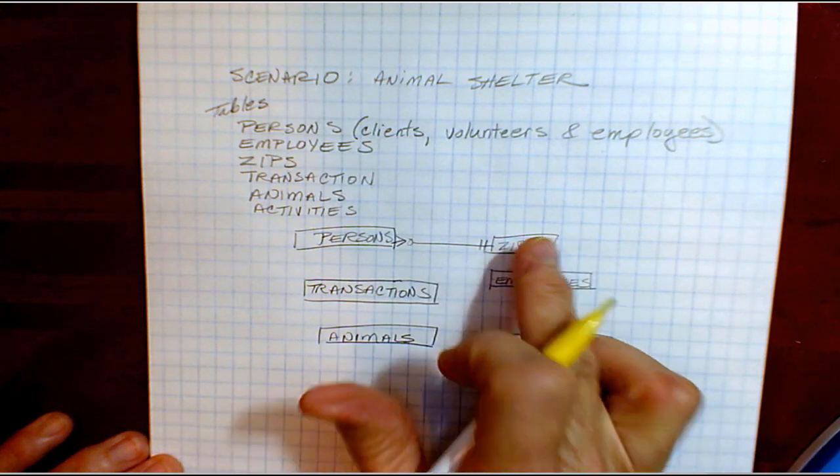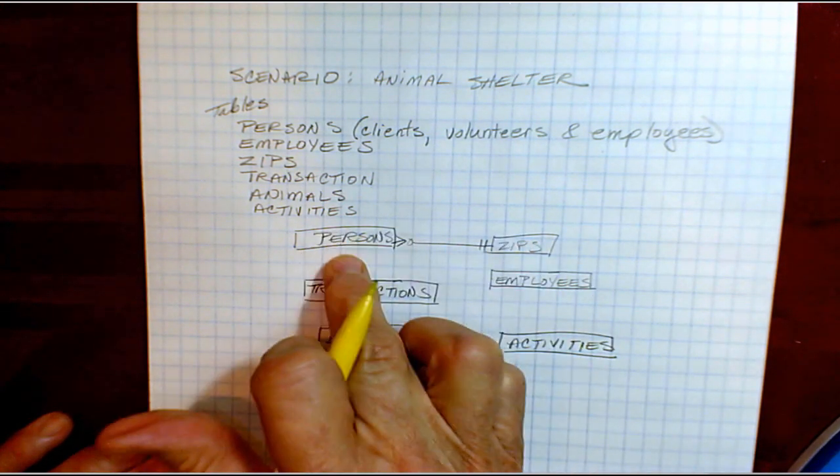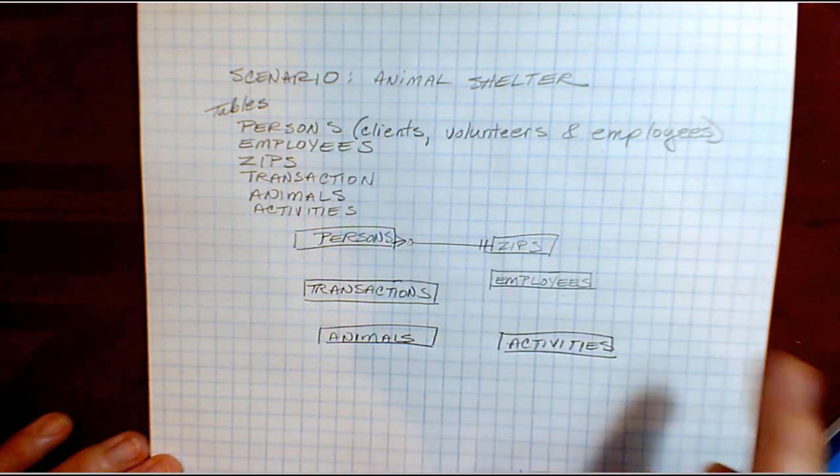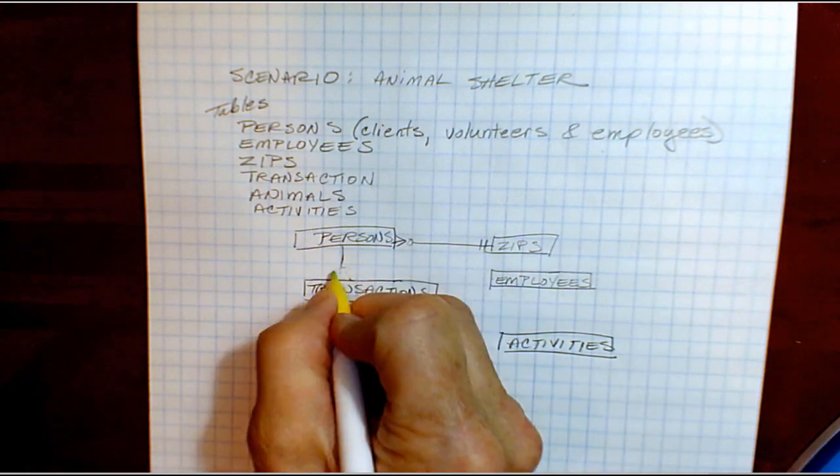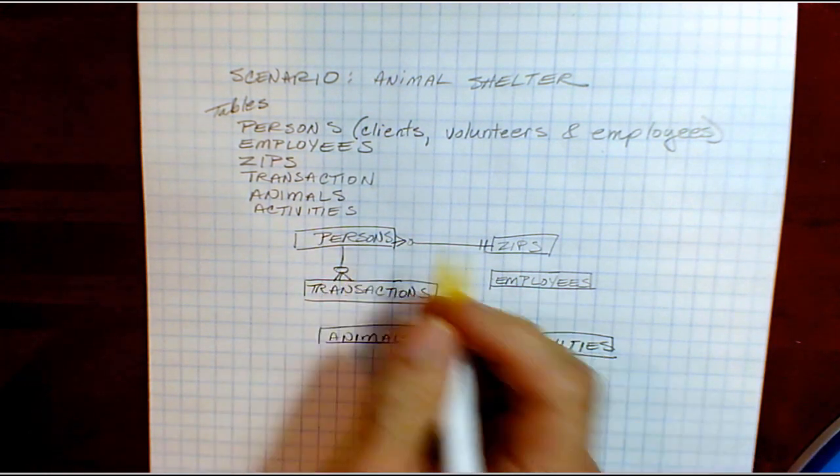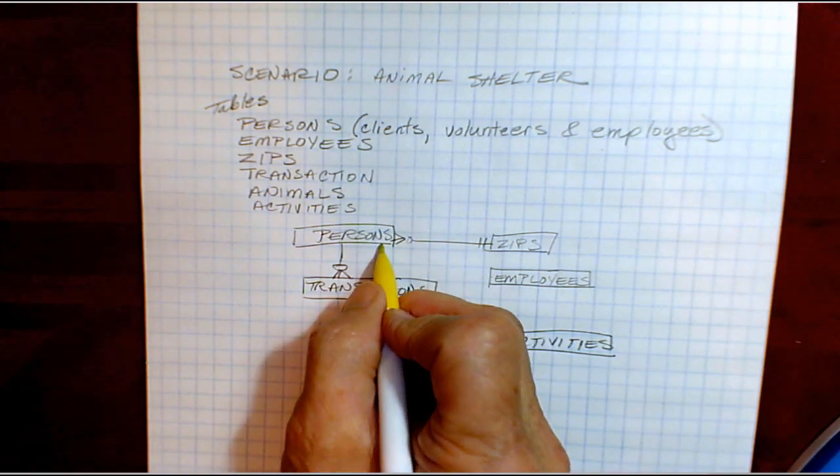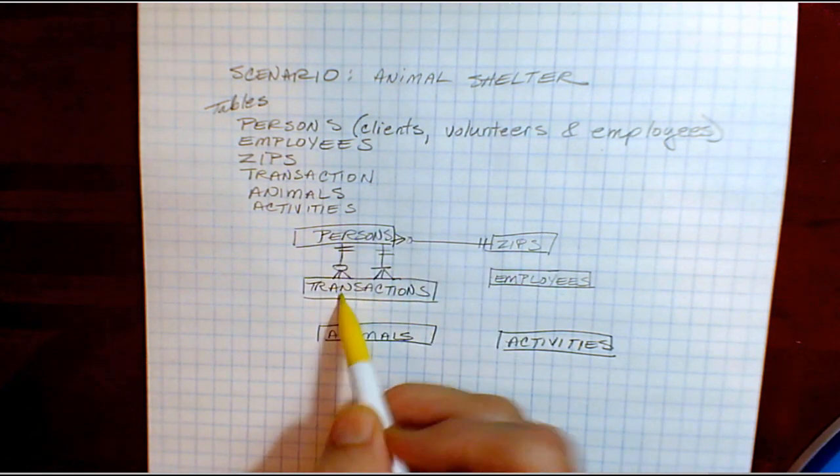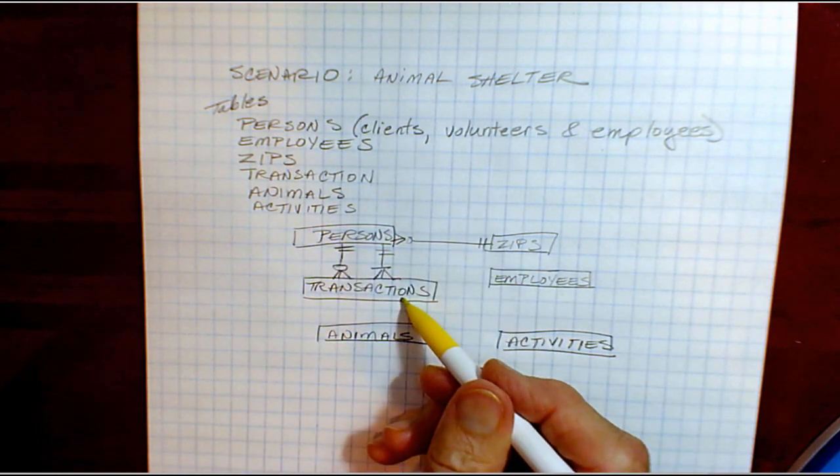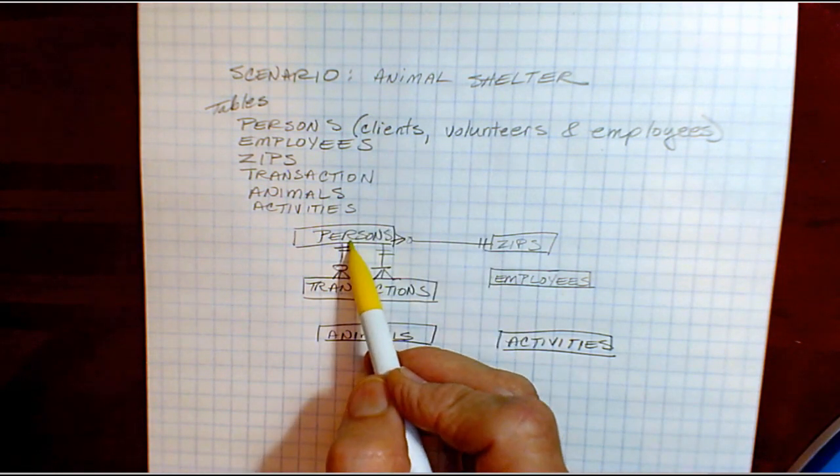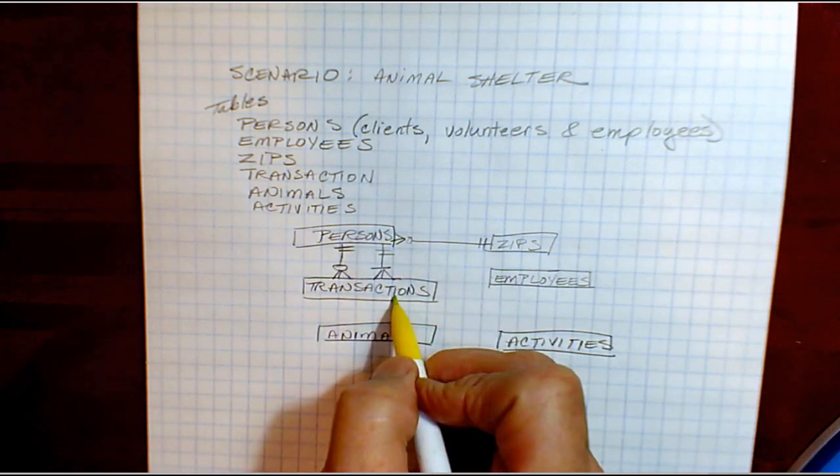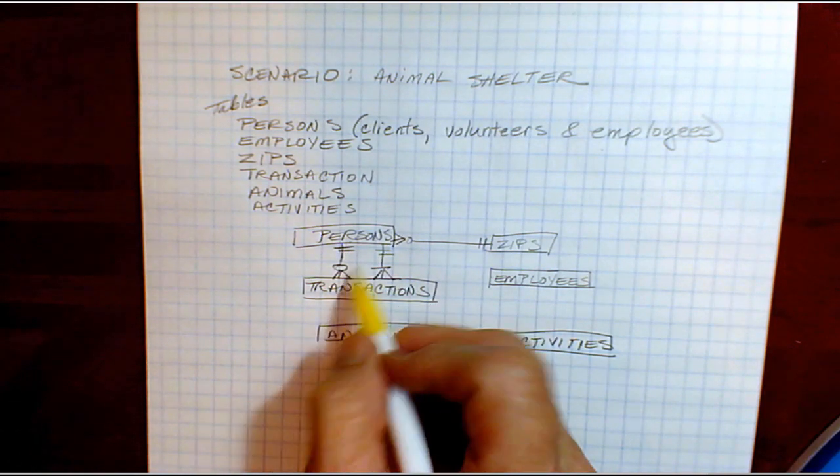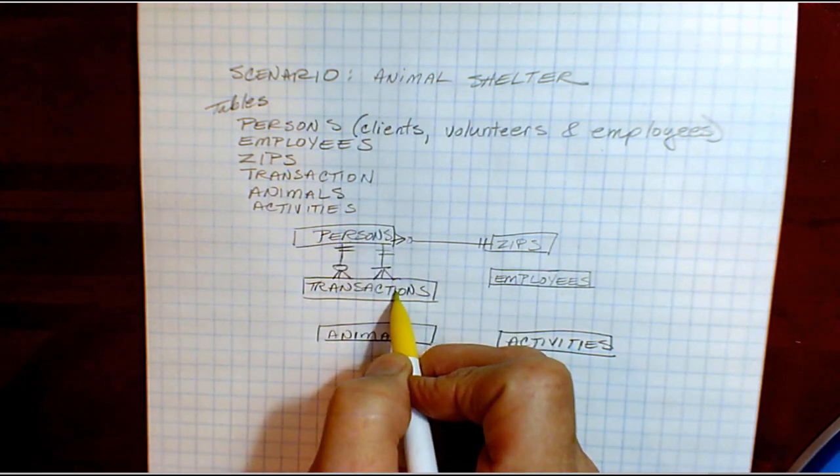So zip is related to person because if we have a person zip code this table will provide the city and state name. We have a relationship between transactions and persons. Actually we have two of those. Because we have a person who's a client who has found an animal and brought it in. We have a person who's an employee who's receiving that animal at the shelter. So a person in one role and another person in another role.